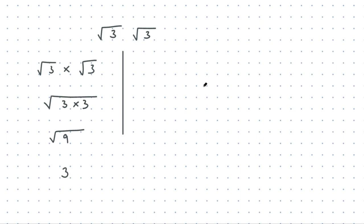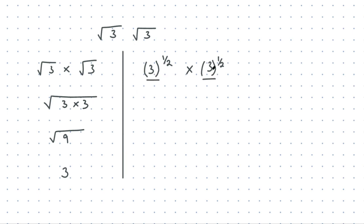We also thought about it using our index laws, where root 3 can be written as 3 to the power of a half. So 3 to the power of a half multiplied by 3 to the power of a half. According to our laws of indices, if we have the same base and we're multiplying, the rule is that you add the powers. So it becomes 3 to the power of a half plus a half, which is 3 to the power of 1, which is 3.